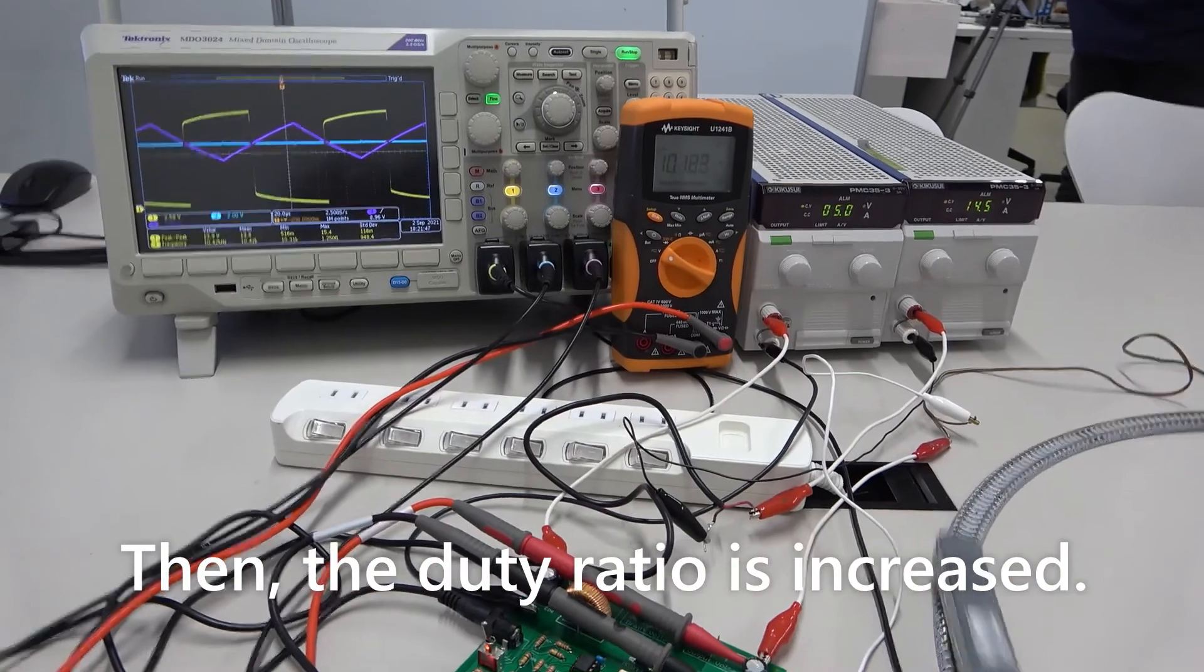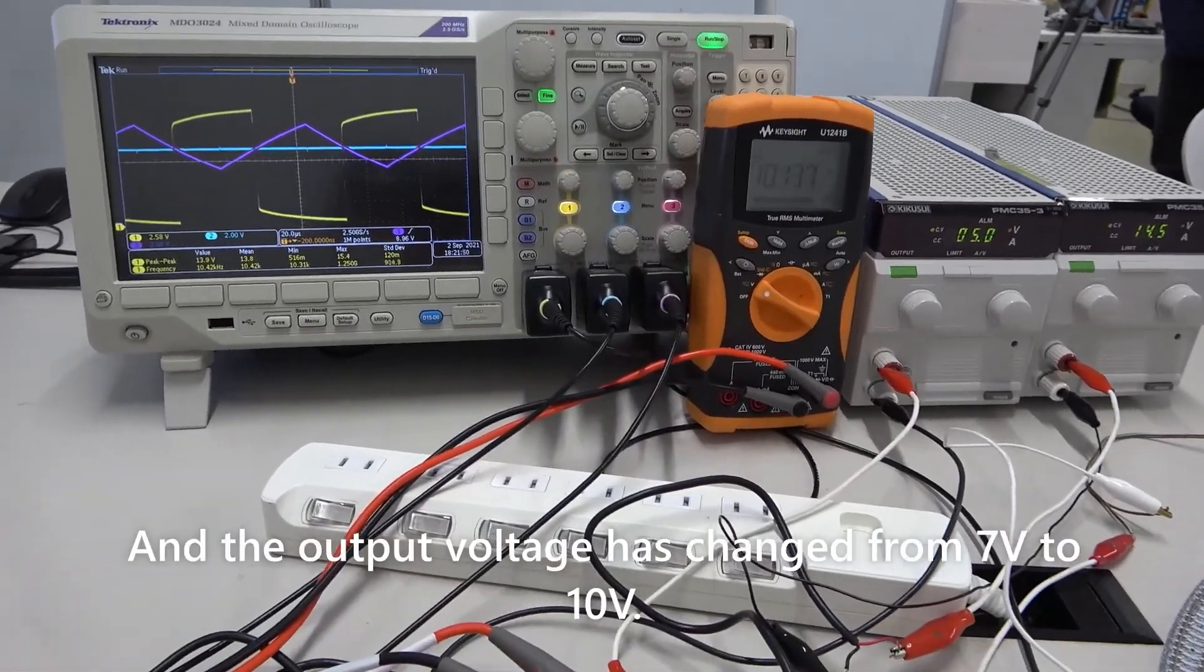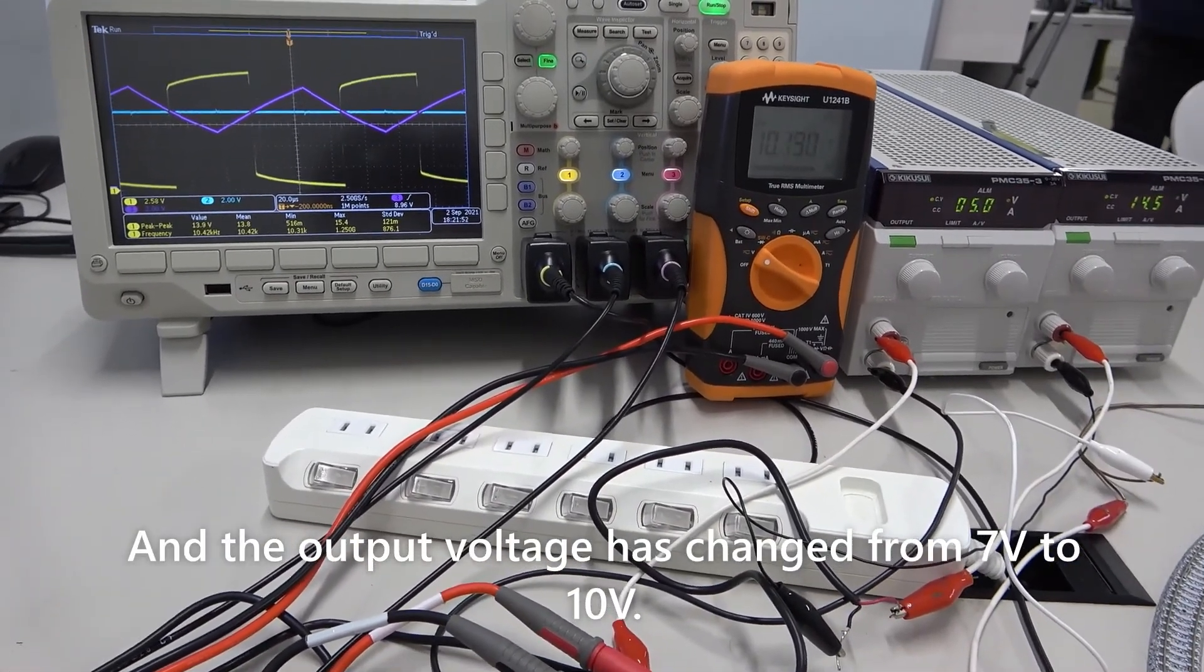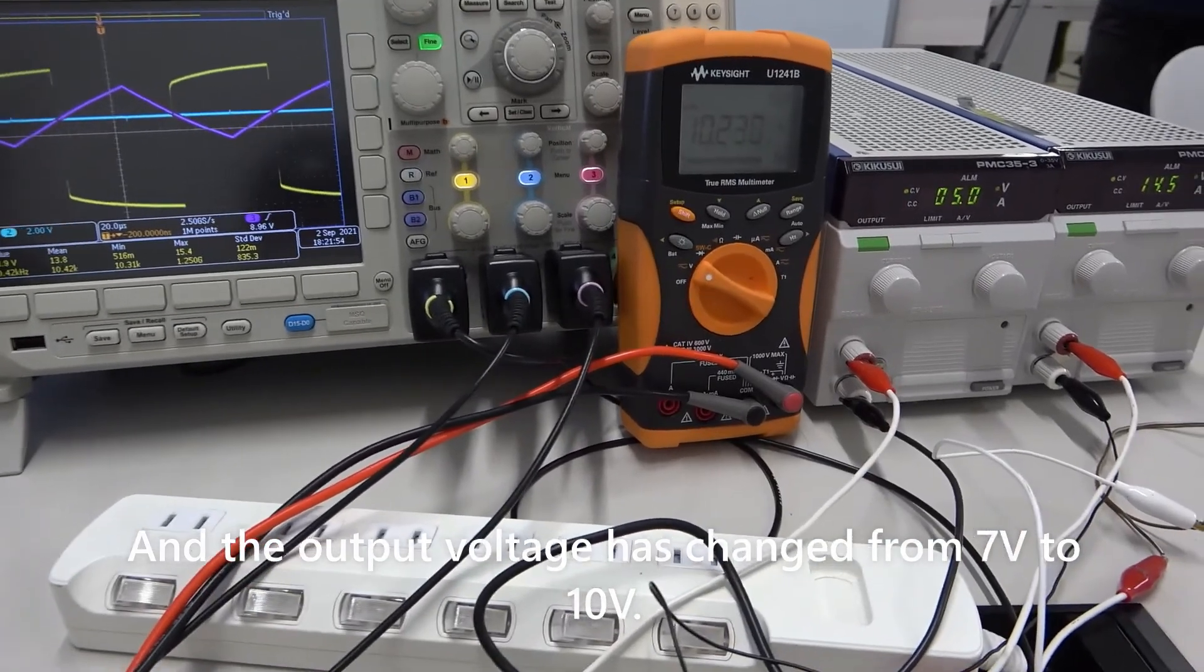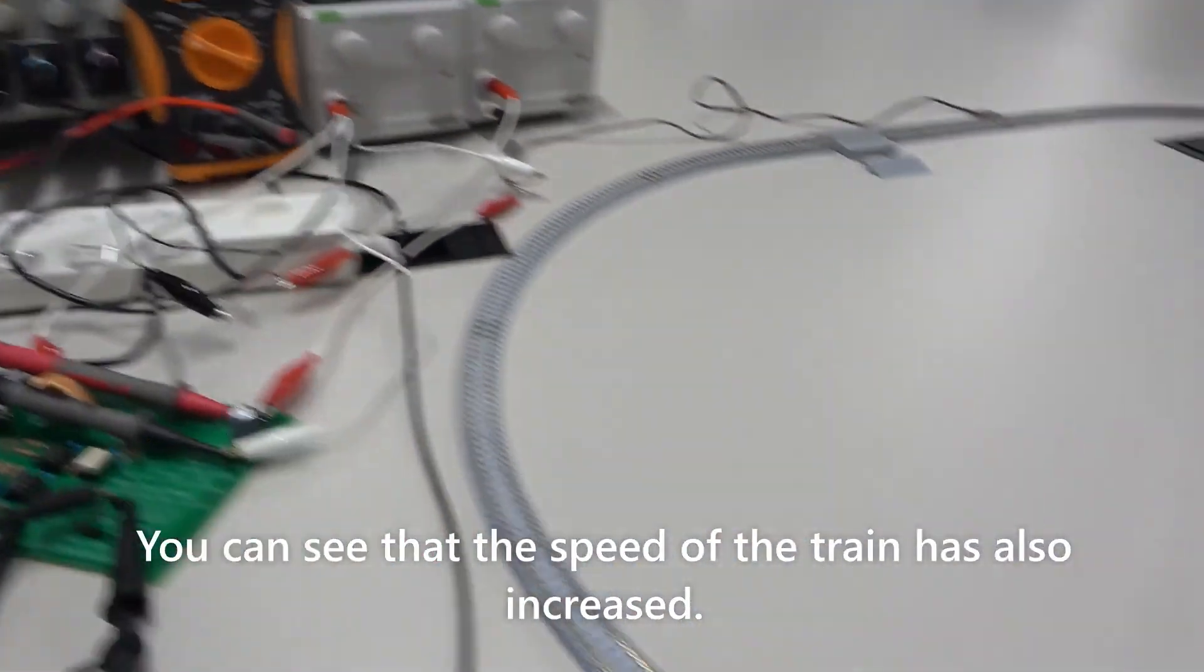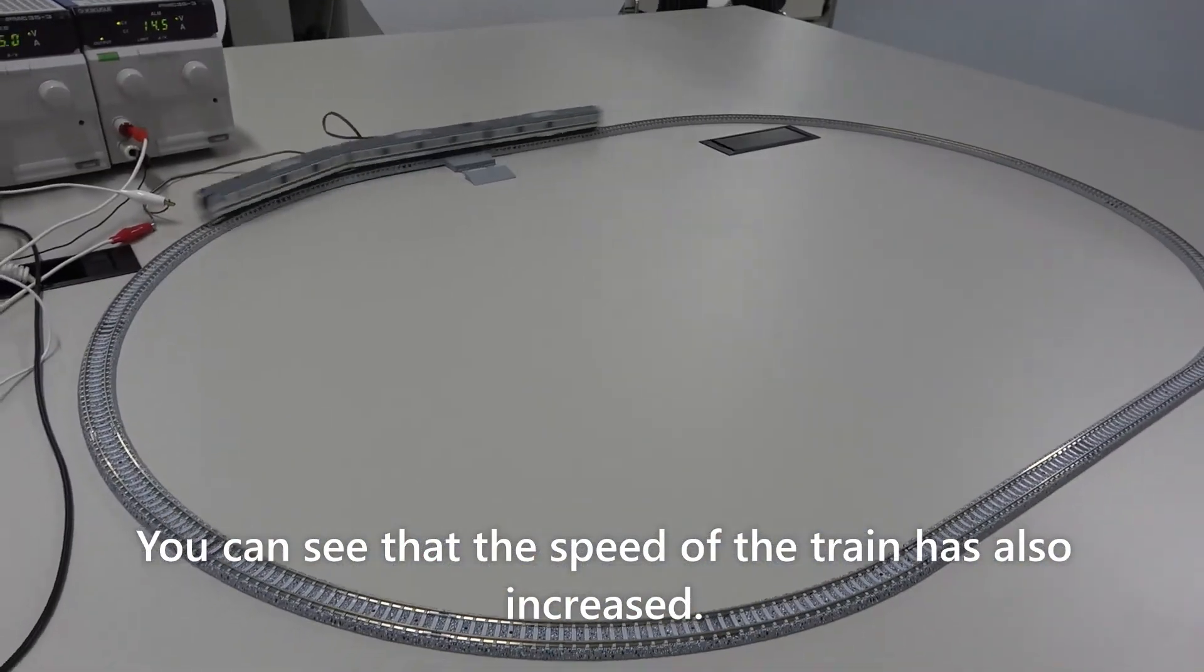Then, the duty rate is increased. And the output voltage has changed from 7 to 10V. You can see the speed of the train has also increased.